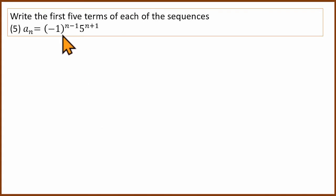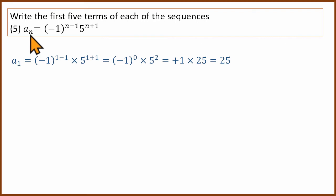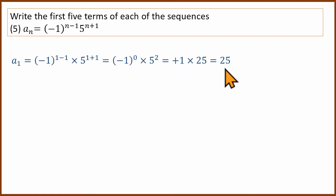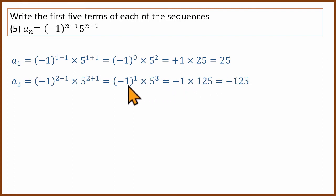This is interesting and complex. For the fifth question, we use the formula with (−1) to the power (n−1) multiplied by 5^(n+1). For the first term: (−1)^0 times 5^2 = 1 × 25 = 25. For the second term: (−1)^1 times 5^3 = −1 × 125 = −125. Anything to the power 0 is 1, so the first term equals 25.